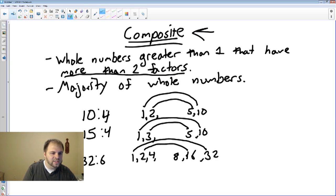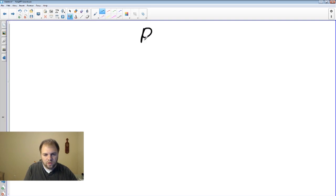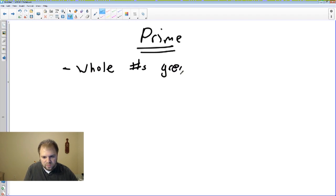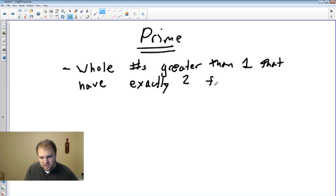Alright? Let's go on to prime. Prime numbers are whole numbers greater than 1. We still want to focus on that, greater than 1. That have exactly 2 factors. That's that key part right there. Exactly 2 factors.